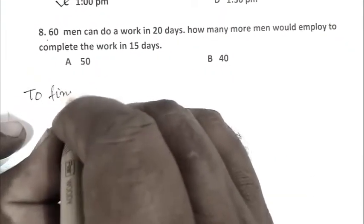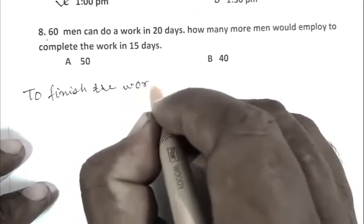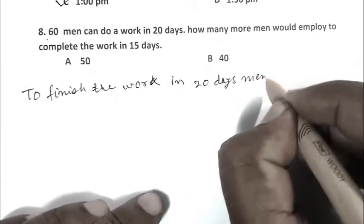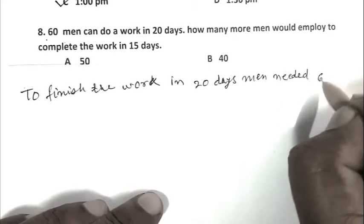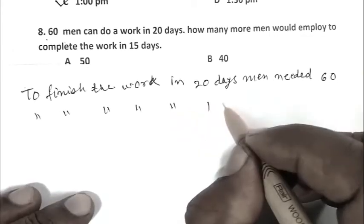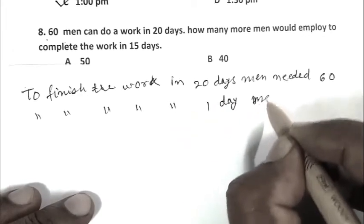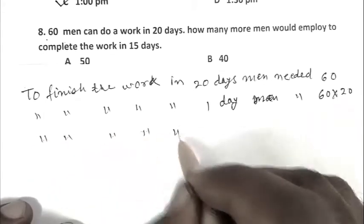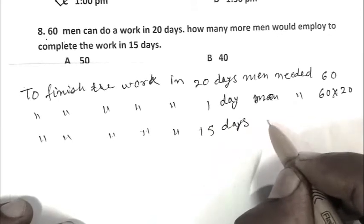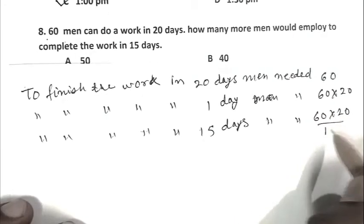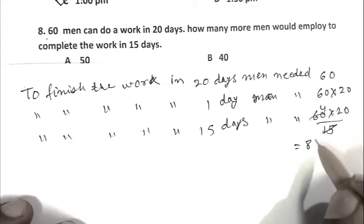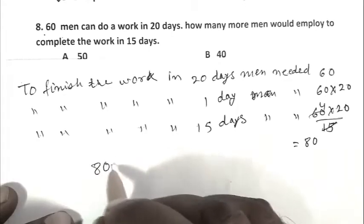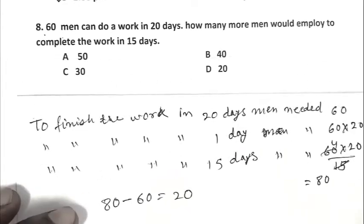To finish the work in 20 days, 60 men are needed. To finish the work in 15 days, men needed is 60 times 20 upon 15, which is 80. More men to be employed is 80 minus 60, that is 20. D is the right answer.